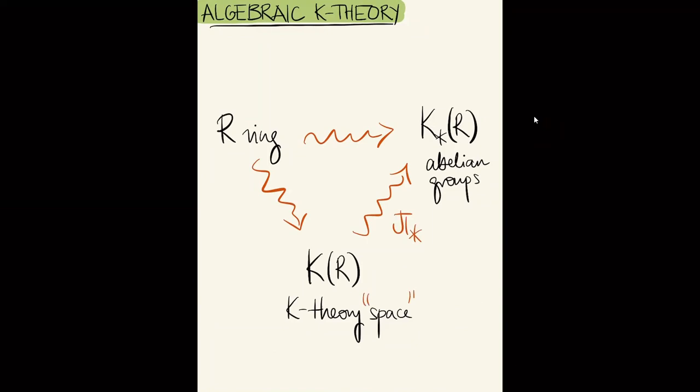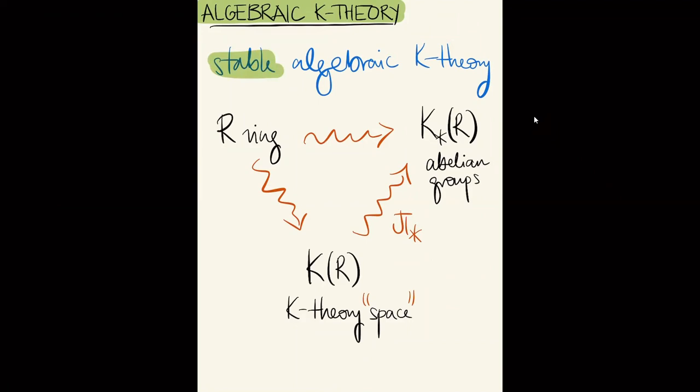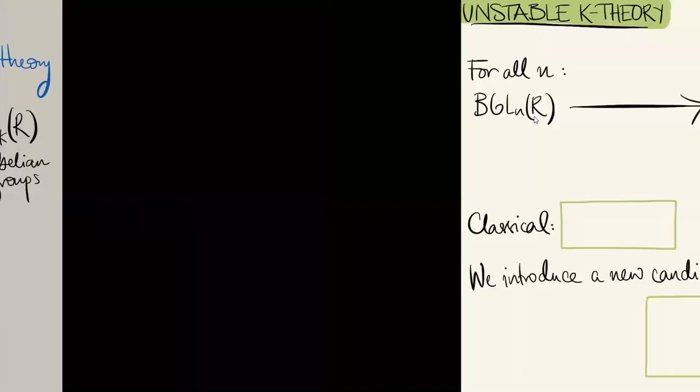Space here is perhaps too strong a word — it's a homotopy type, or an anima if you like. I'm going to call it the K-Theory space throughout this talk. I'll also, once in a while, call this Stable Algebraic K-Theory, to distinguish it from Unstable Algebraic K-Theory, which I'm going to tell you about now.